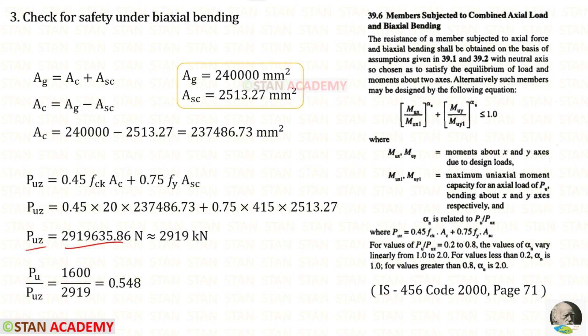We can convert this into kilonewton. For that, we have to divide this by 1000. So, we can keep it approximately 2919 kN. For Pu upon Puc, we will get 0.548.